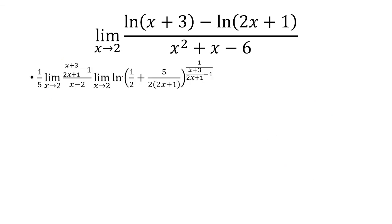So now putting this together, we said this was negative 1 fifth. This was 1. And so 1 fifth times negative 1 fifth times 1 is negative 1 over 25. And that is my limit. Thank you.